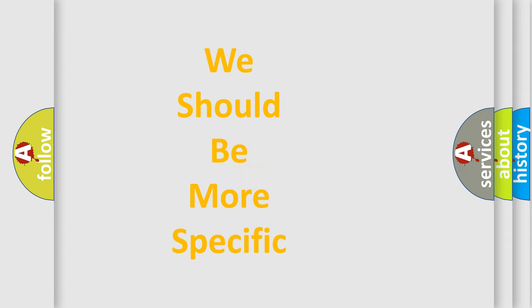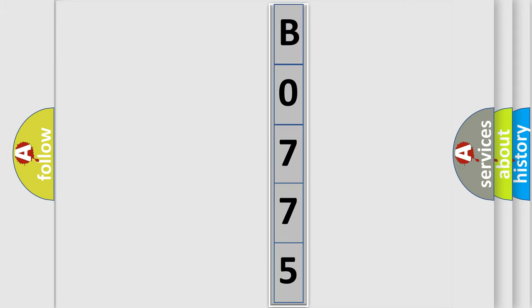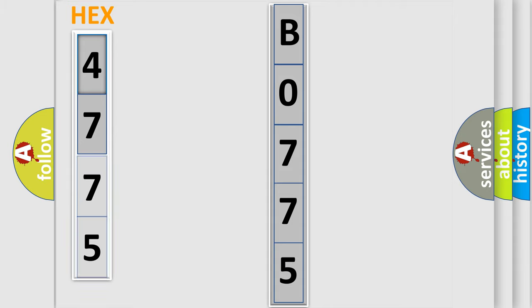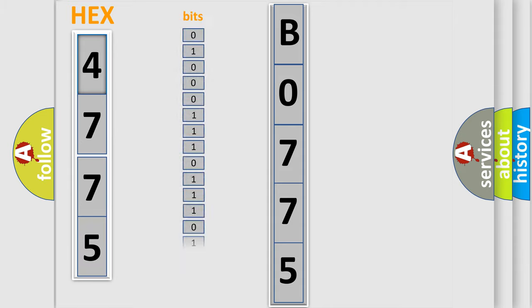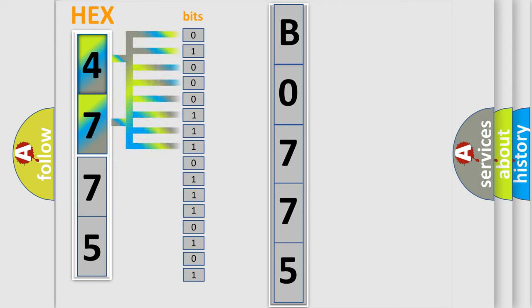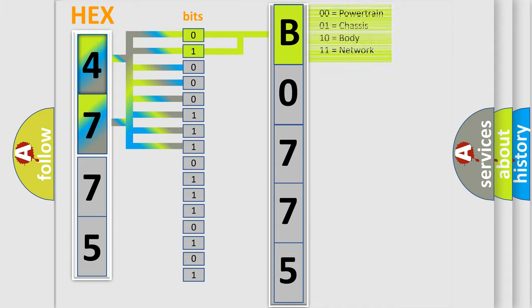The following demonstration will help you look into the world of software for car control units. The error code is split into two bytes consisting of 16 bits. One bit is the basic unit that each computer works with. The bit has two logical states: zero, low level, and one, high level. By combining the first two bits, the basic character of the error code is expressed.